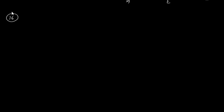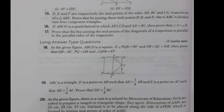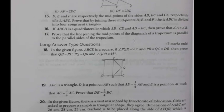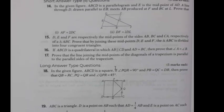Now let us see the 16th question. ABCD is a quadrilateral in which AB is parallel to CD and AD equals BC — this is an isosceles trapezium. Only one pair of sides is given parallel, so don't assume that the second pair is also parallel, otherwise you will not get the required answer.